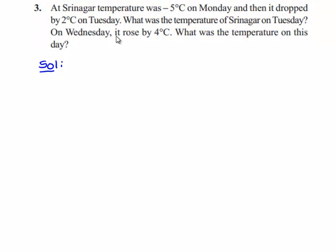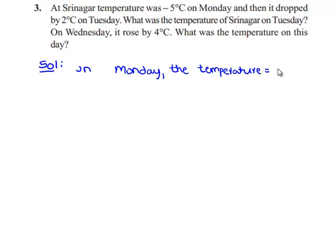We'll first note down the temperature of Srinagar on Monday. On Monday, the temperature is minus 5 degrees Celsius as given in the problem. It dropped by 2 degrees Celsius on Tuesday. Therefore, in order to obtain the temperature on Tuesday, we have to subtract 2 degrees Celsius from the temperature on Monday, that is minus 5 degrees Celsius.